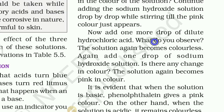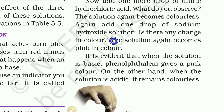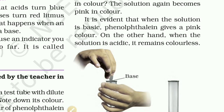Continue adding sodium hydroxide solution drop by drop while stirring until the pink color just appears. Now add one more drop of dilute hydrochloric acid — the solution again becomes colorless. It is evident that when the solution is basic, phenolphthalein gives a pink color, and when the solution is acidic, it remains colorless.